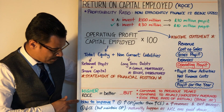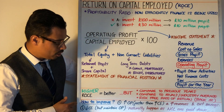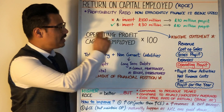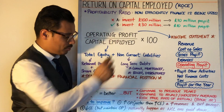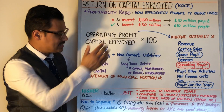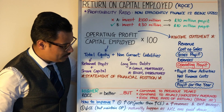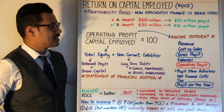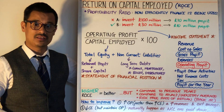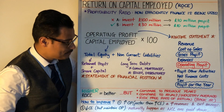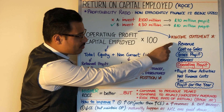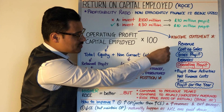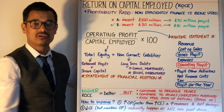The other thing to think about is how to improve your ROCE. One way is to increase operating profit whilst maintaining your capital employed, or at least make sure operating profit is increasing faster than capital employed. Ways to do that include increasing revenue, or looking for cost efficiency in your cost of sales or expenses.